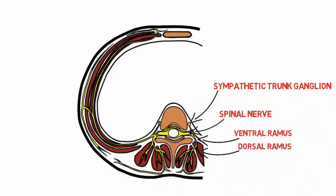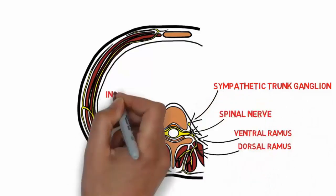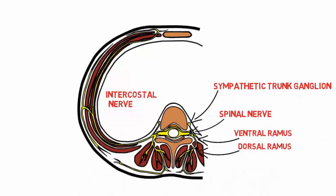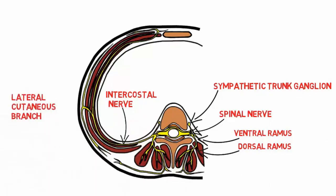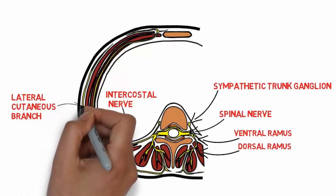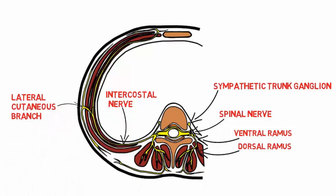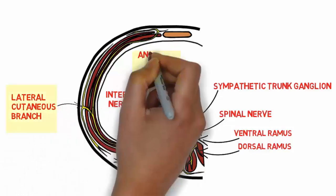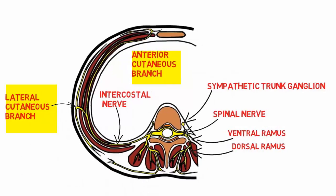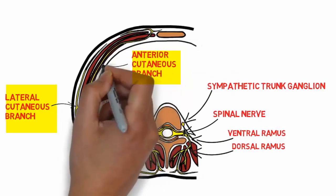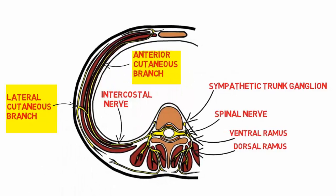The dorsal branch of spinal nerves innervates the muscle and skin of the medial back. The ventral branch of spinal nerves innervates the chest and abdominal wall. The two main branches are the lateral cutaneous branch and the anterior cutaneous branch.